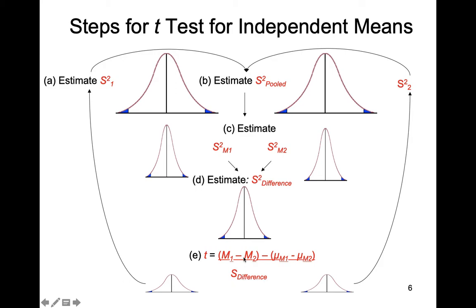The standard error tells us how much of a difference we can expect just due to random sampling error. That's the bottom of our t-test formula. The top evaluates how big a difference we see between our two sample means relative to how much of a difference we would expect.